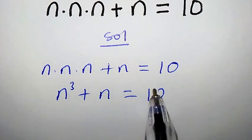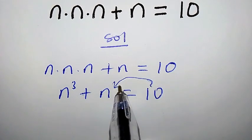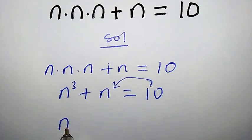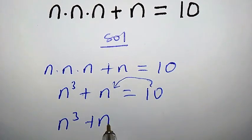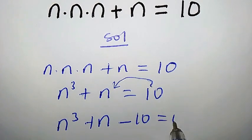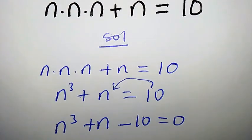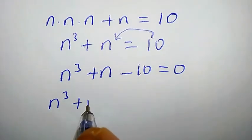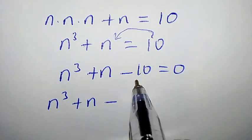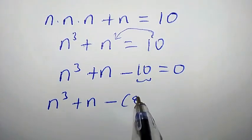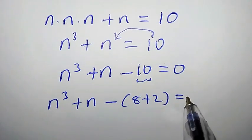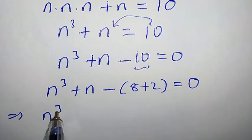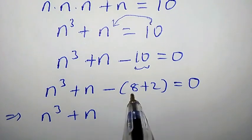The first step we are going to take is to transfer this term to the left side. So it becomes n³ plus n minus 10 equal to 0. Let's proceed further. We can write 10 as 8 plus 2, giving us n³ plus n minus 8 minus 2 equal to 0.